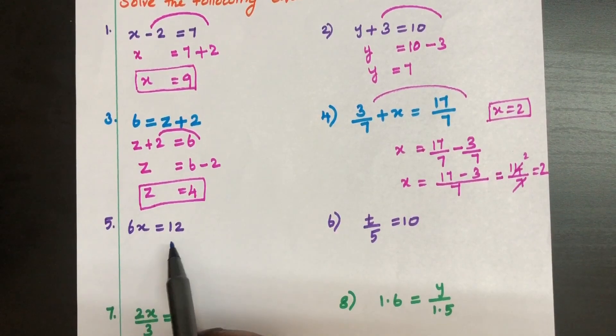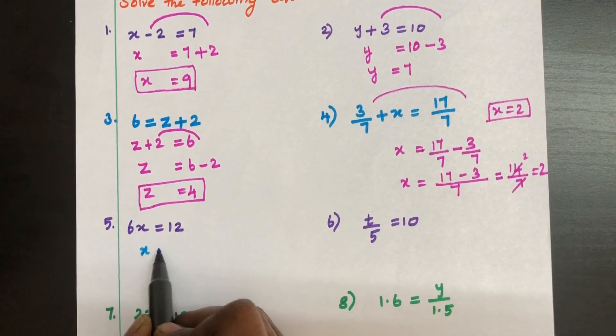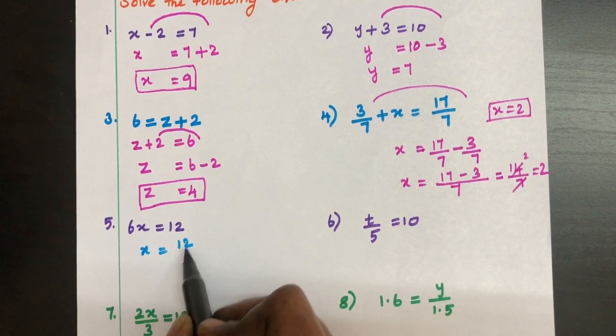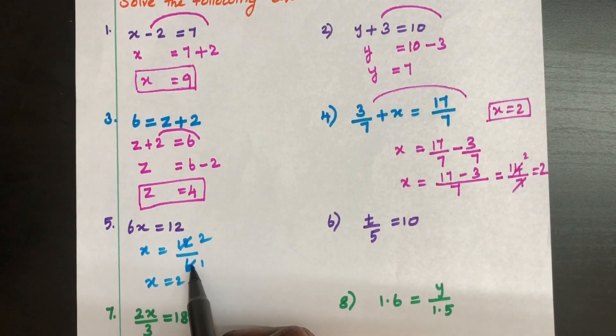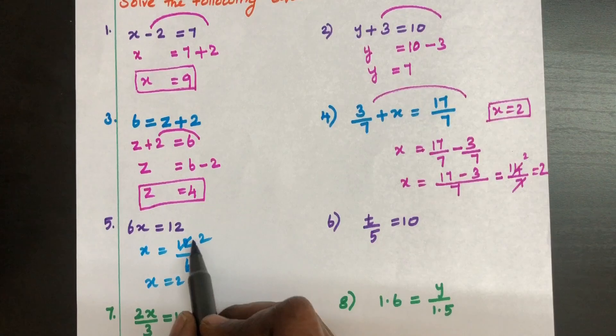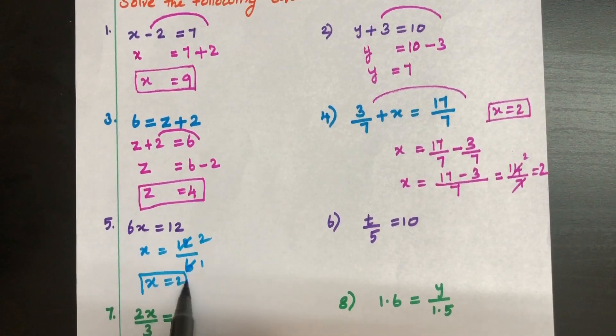Fifth question. 6X equal to 12. X equal to 12 divided by 6. So X equal to 2. Using 6 we can cancel, 1 times 6 is 6, 2 times 6 is 12. So X equal to 2.